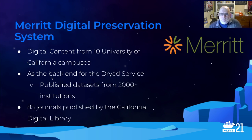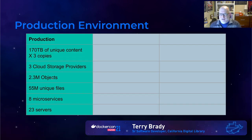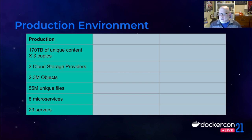The system that I and my team work on is called Merritt. It is a digital preservation system for the University of California. We house digital content from the 10 UC campuses, we're the back-end repository for the Dryad service which hosts published datasets from over 2,000 institutions, and we house archives of 85 journals published by the California Digital Library. Our production environment hosts 170 terabytes of unique content, replicated in three copies spread around the United States using three different storage providers. The repository contains 2.3 million logical objects consisting of 55 million unique files. The Merritt service is composed of eight microservices running on 23 servers.